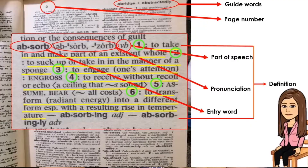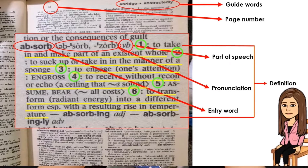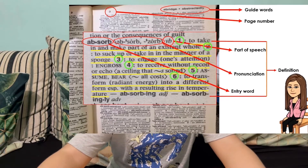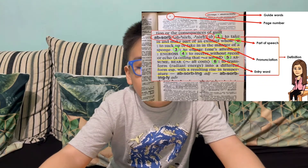Next, read the guide words. These are the two words at the top of the page that tell you what the first or last word on that page of the dictionary is. These words will help you find the word you're looking for in the right letter section.